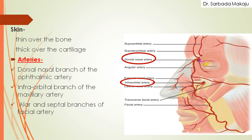Now the arterial supply to the external part of the nose. It is supplied by the dorsal nasal artery, which is a branch of the ophthalmic artery. Beneath the orbit, there is one more artery known as the infraorbital artery, which is a branch of the maxillary artery. When you move downwards to the ala, there is a small artery known as the alar artery, which is also known as the septal branch of the facial artery.